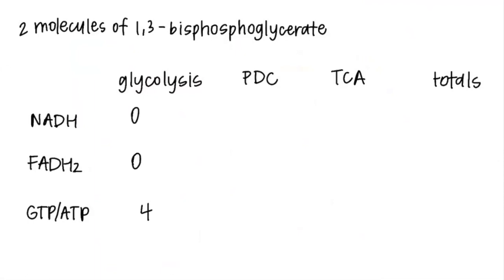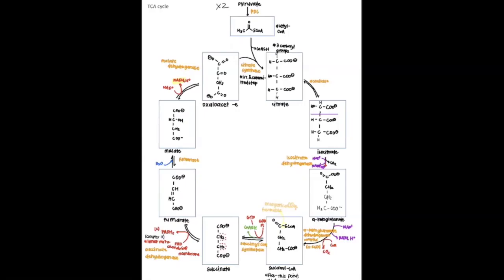Next we go to the PDC and TCA. Because we start off with two molecules of pyruvate from the original two molecules of 1,3-BPG, we're going to go through the PDC and the TCA twice. So here we make two NADH, then two NADH, then two NADH, two GTP, two FADH, and finally two NADH.